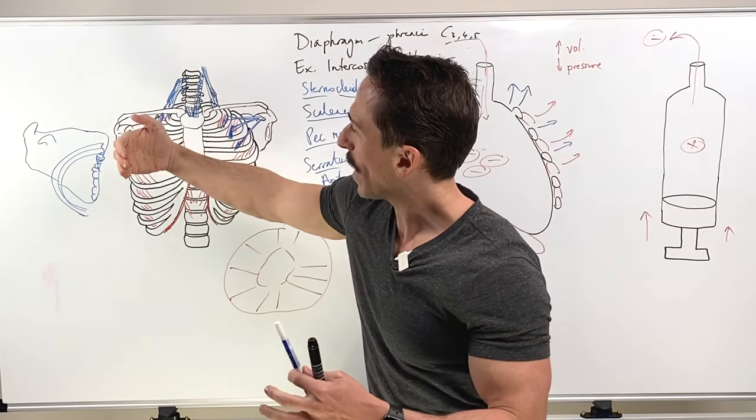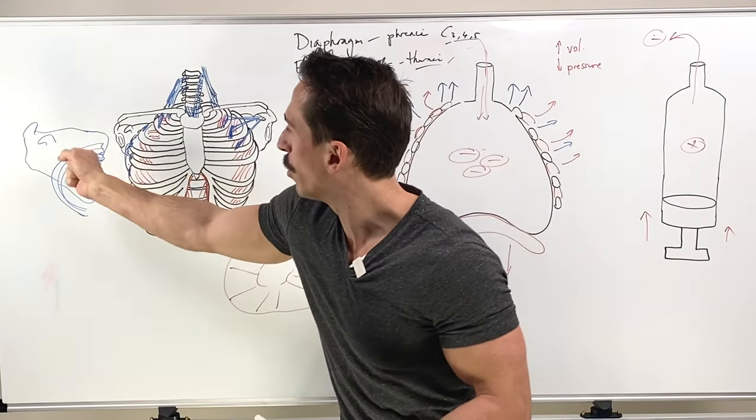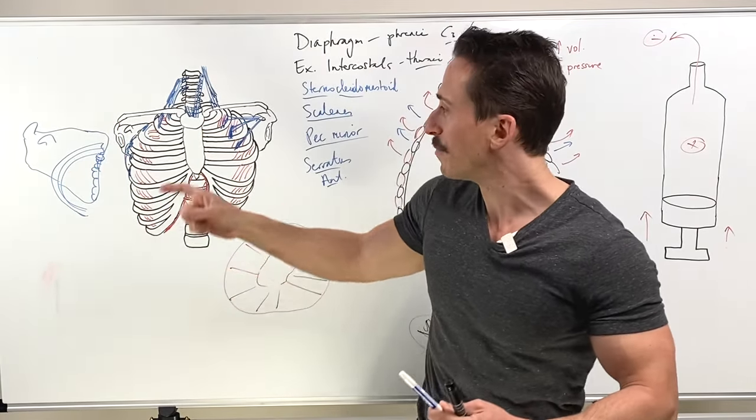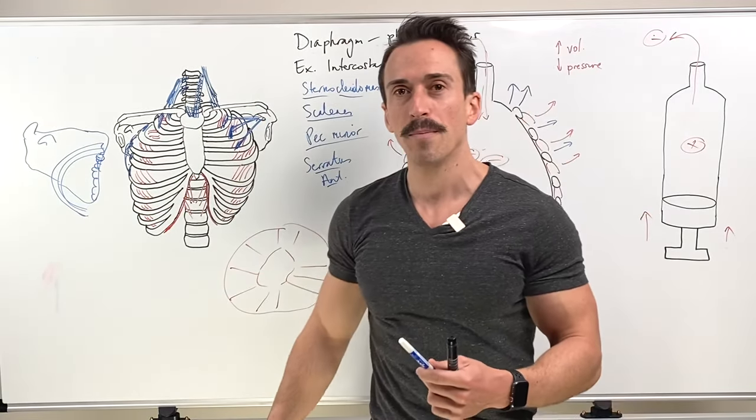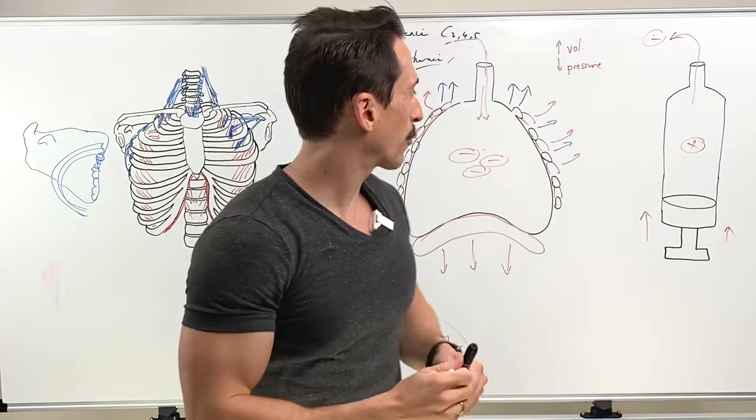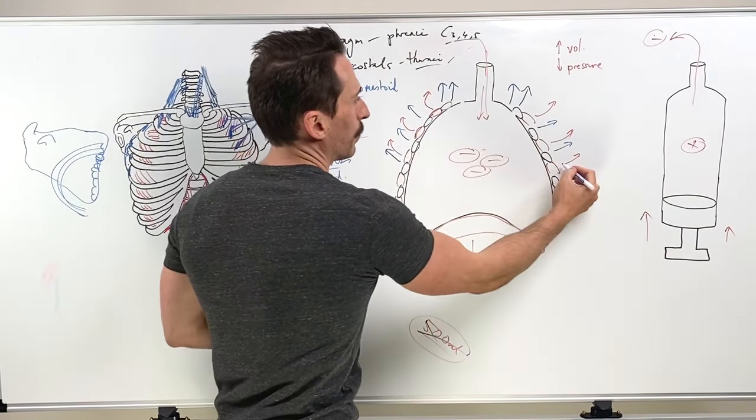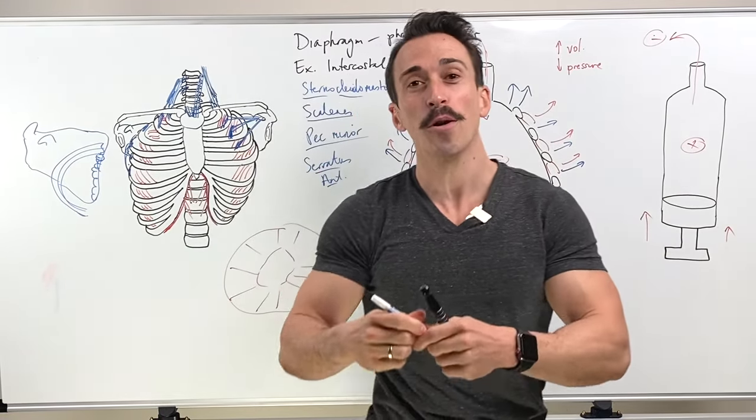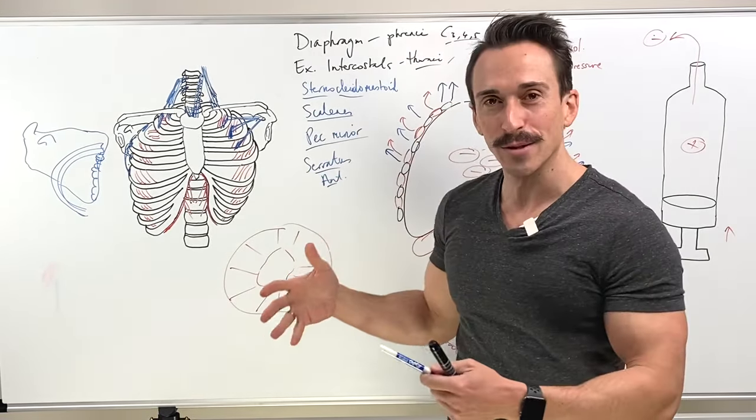It's known as the boxer's muscle because when you punch, the scapula will slide around the ribcage. So if you pull on that, the scapula slides around the ribcage. Now again, serratus anterior, if the scapula remains fixed, helps to increase thoracic volume. So you can see we continue to recruit more and more of these muscles for breathing.